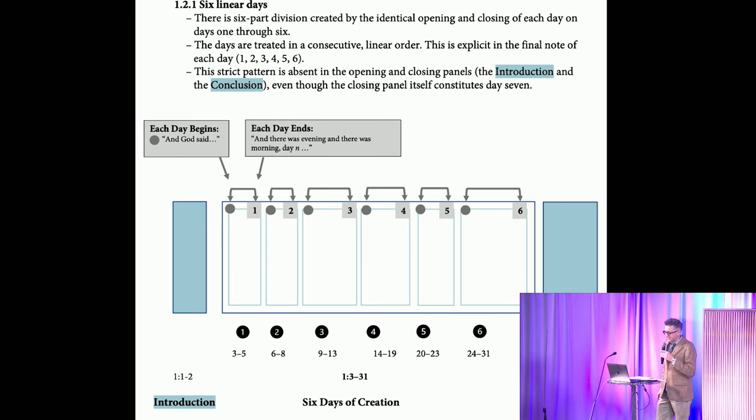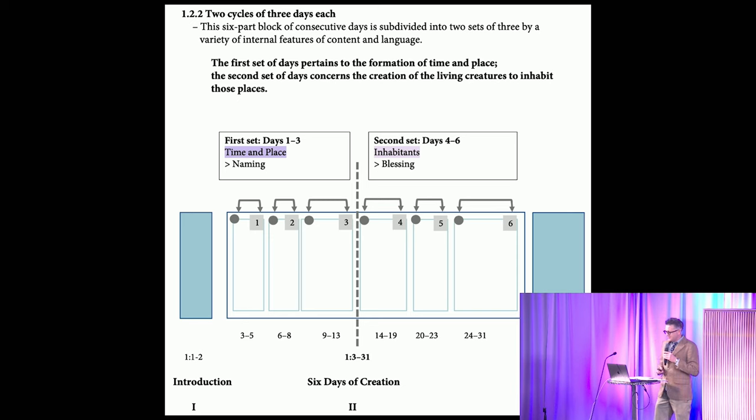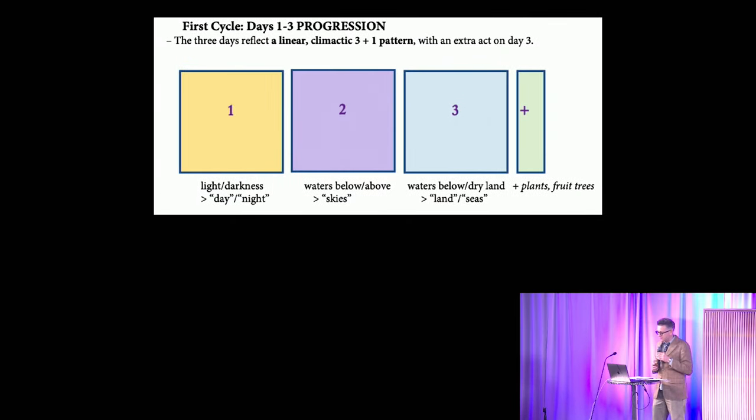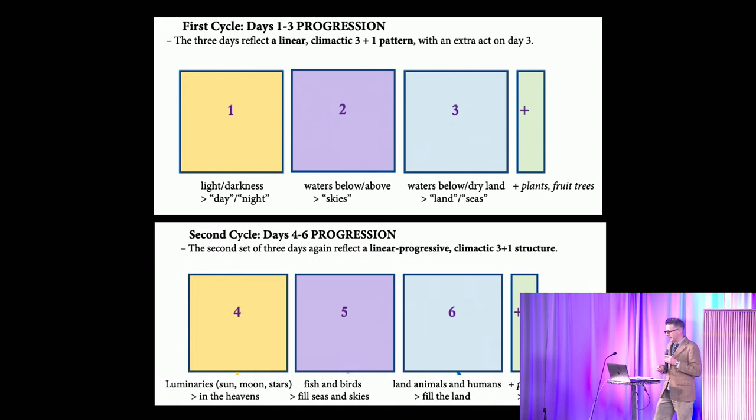The days are treated in consecutive linear order, obviously, and this strict pattern is absent in the opening and the closing panels, even though the closing panel constitutes day 7. This six-part block of consecutive days is, as widely recognized, subdivided into two sets of three by a variety of internal features of content and language. The first set of days pertains to the ordering of time and place, and the second set of days concerns the creation of living creatures to inhabit those places.